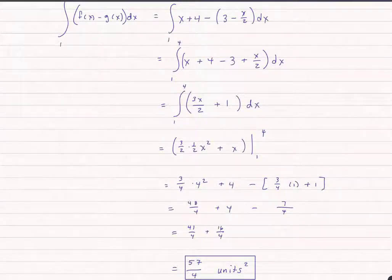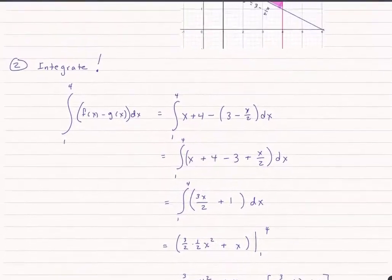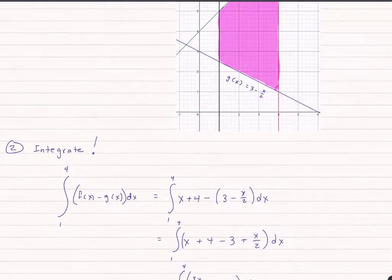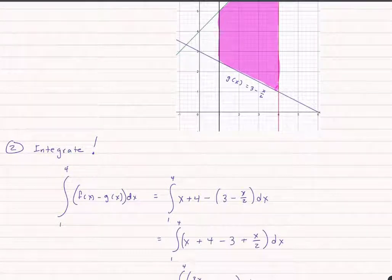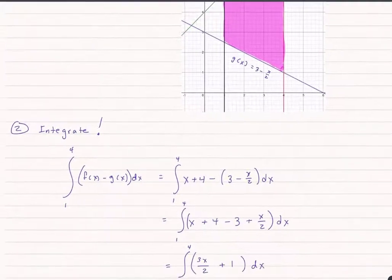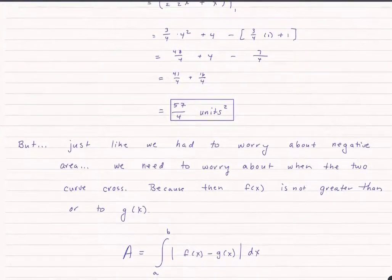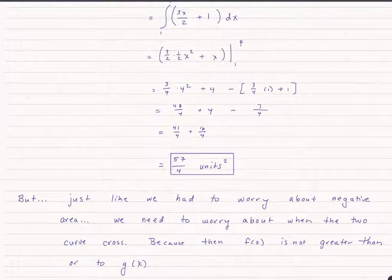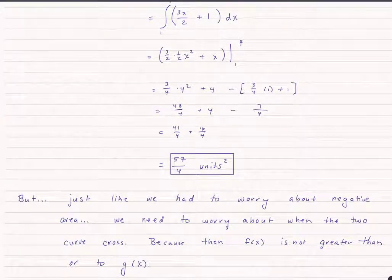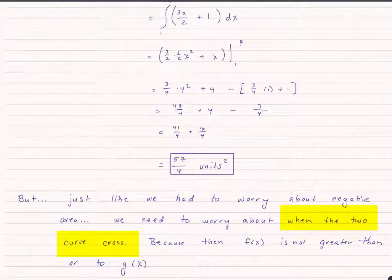All right, so this is pretty straightforward, very similar to what we did before, but now instead of just f of x, it's f of x minus g of x. Of course, you know it can't be that easy, right? We're going to have to worry about something else, and that something else is what happens when these two curves cross.